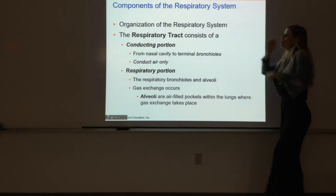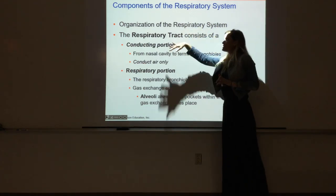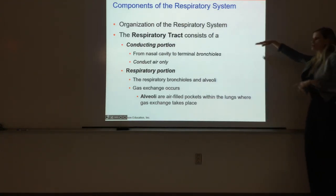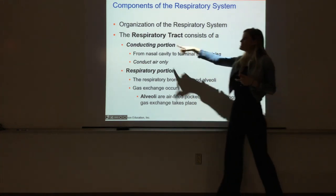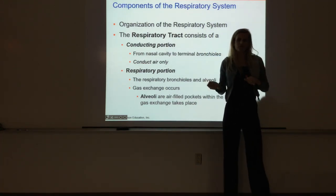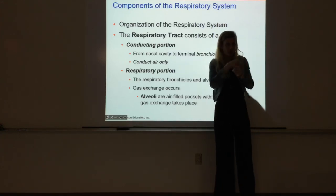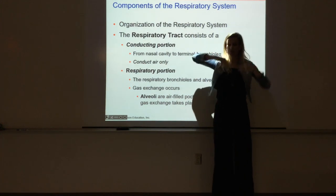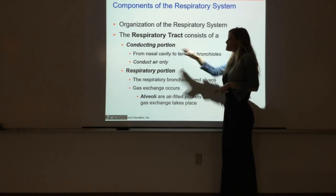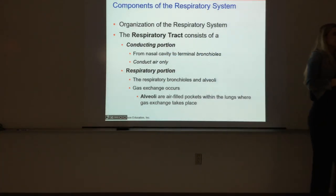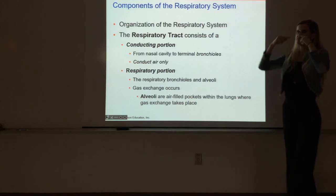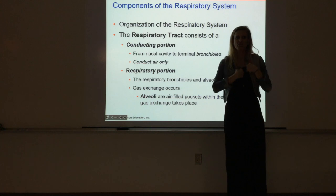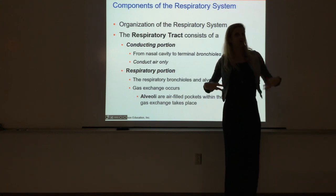We can also break the respiratory system up based on function - a conducting portion and a respiratory portion. The conducting portion involves literally just the movement of air with no gas exchange going on. We're just taking atmospheric air and bringing it into our bodies or pushing air out. The conducting portion is everything from the nasal cavity down to the terminal bronchioles - so the nasal cavity, pharynx, larynx, trachea, bronchi, and the initial bronchioles.